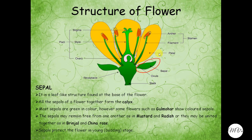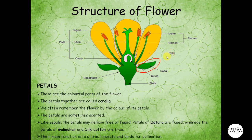The next is petals. These are the colorful parts of the flower. The petals together are called corolla. This part is a petal. The petals together form corolla. We often remember the flower by the color of its petals.